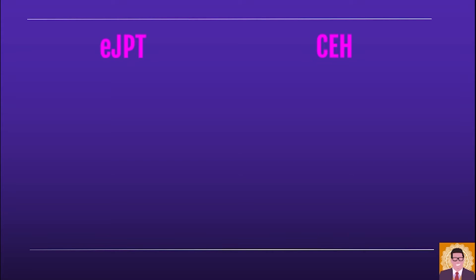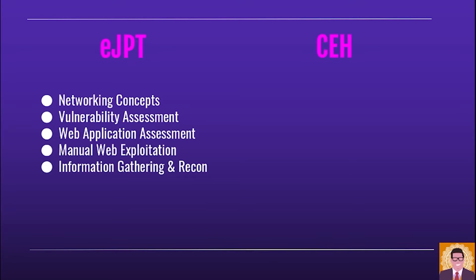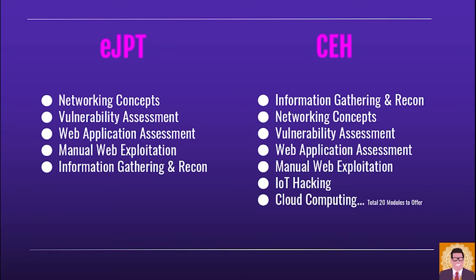Here is a bird's eye view of the content for these certifications. eJPT contains networking concepts, basic vulnerability assessment, web application assessment, manual web exploitation, and basic information gathering and reconnaissance. On the other hand, CEH offers 20 modules which contain the eJPT syllabus plus various other segments such as IoT hacking, cloud computing, and 18 other modules.